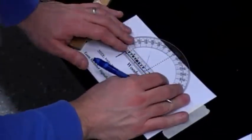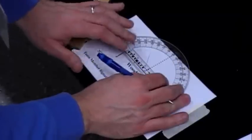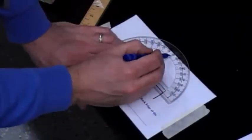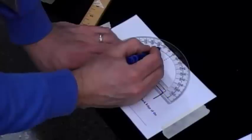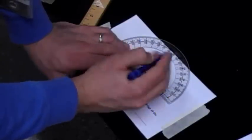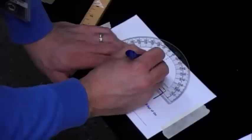So the next step is once you have that reflected ray drawn on your page, you need to go ahead and measure what the value is of that angle that it makes with the normal line. In this case, I find the value of that angle to be 39 degrees.